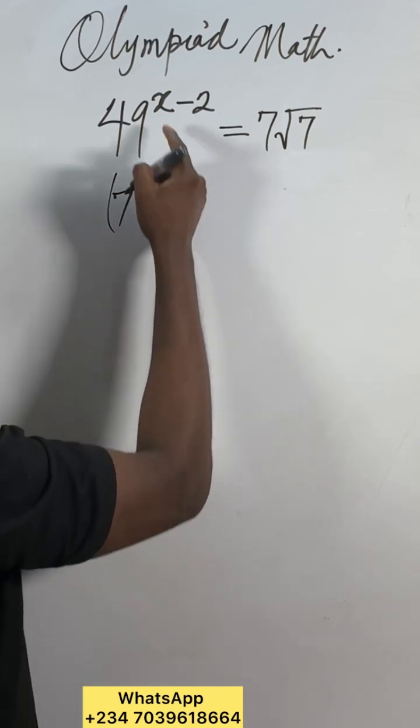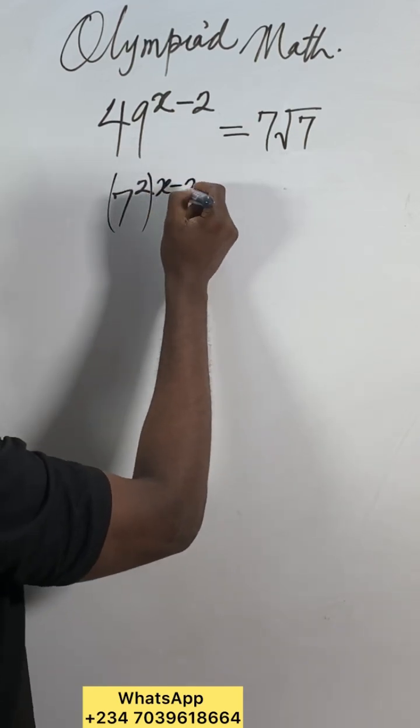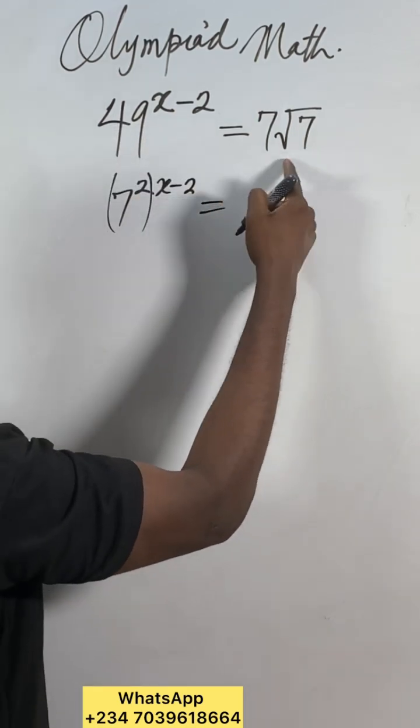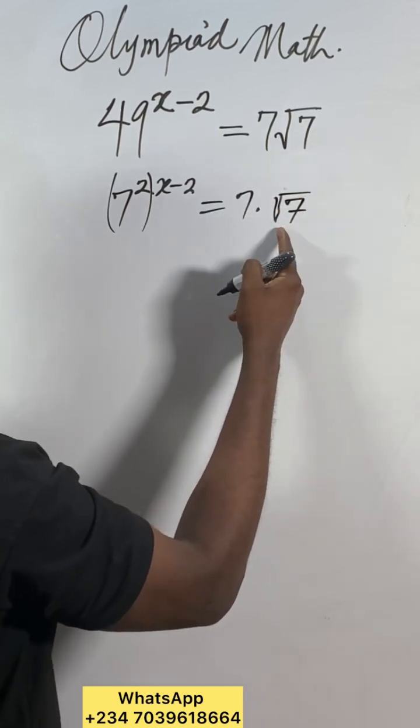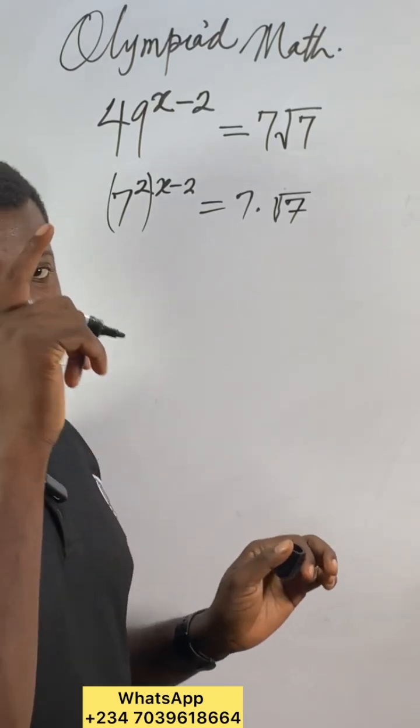You repeat this x minus 2 as the exponent. Here on the right side, 7 times the square root of 7. Normally you should put it as 7 to the power of 1 times 7 to the power of 1 over 2.